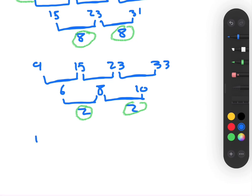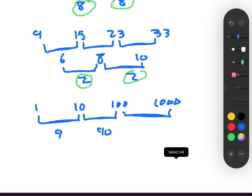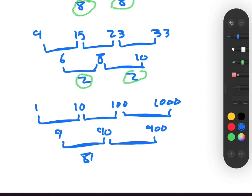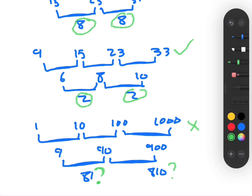Now let's look at the sequence 1, 10, 100, and 1,000. The first differences are: 1 and 10 gives 9, 10 and 100 gives 90, 100 and 1,000 gives 900. The second differences are 81 and 810. The second difference is not a constant, so this third sequence is not a quadratic sequence. The first two sequences are quadratic because the second difference is constant, but the third one doesn't satisfy our condition.